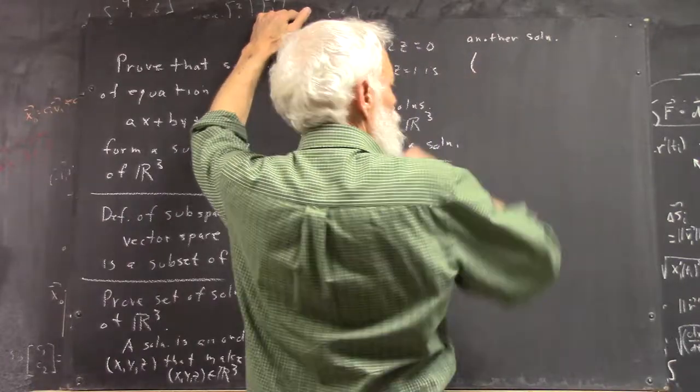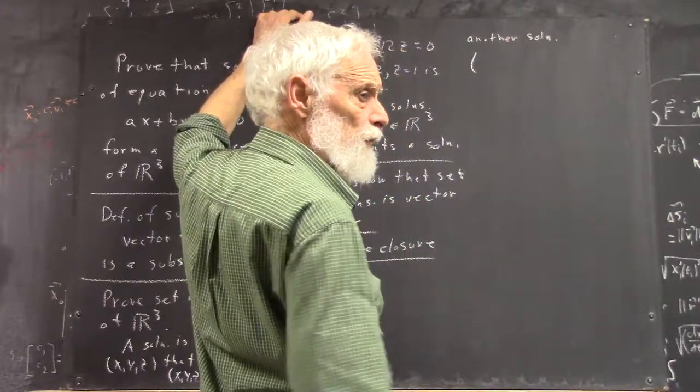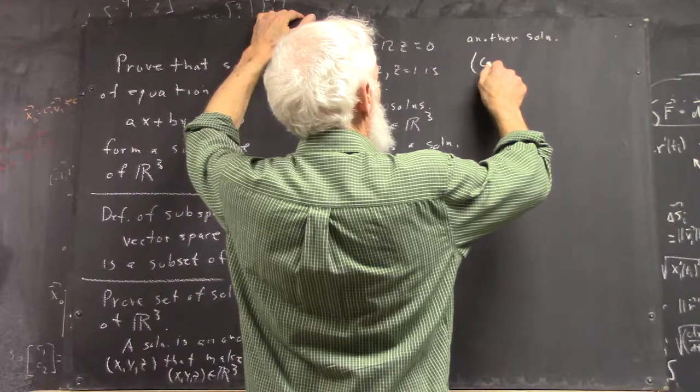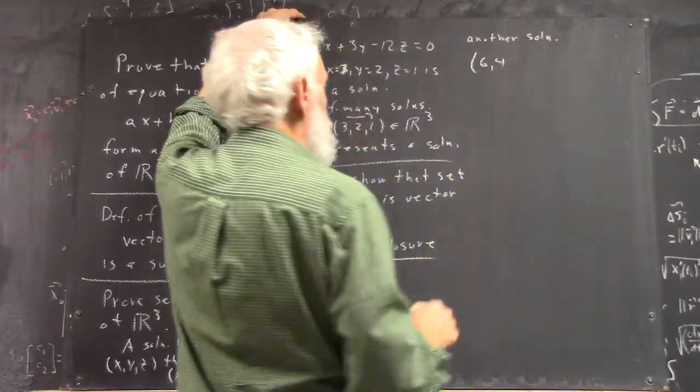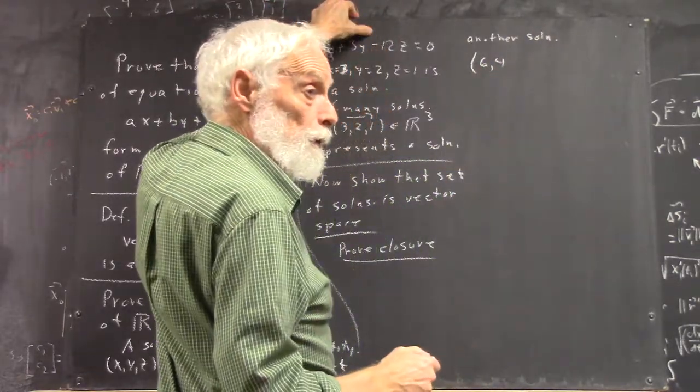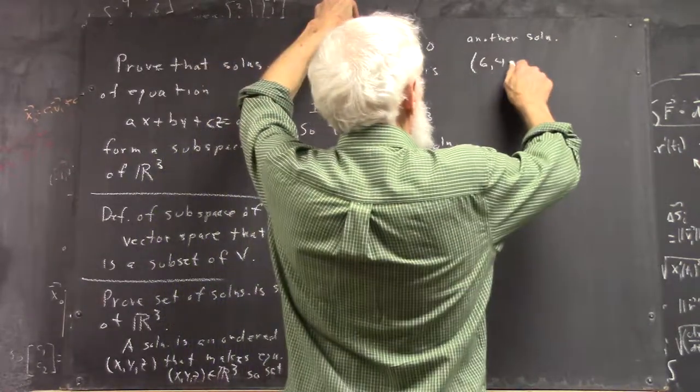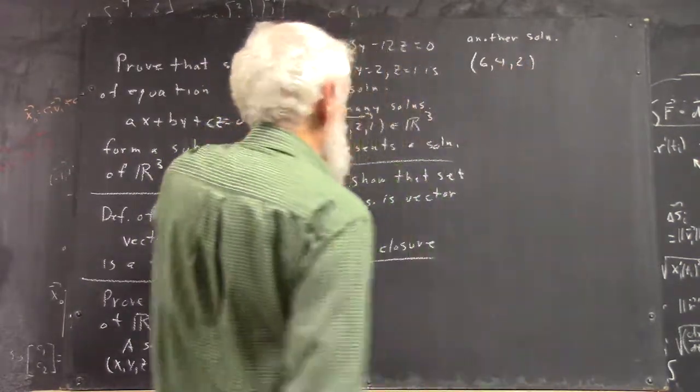I think you said x was six, y was four. So you're going to have 12 and 12, so z would have to be two, right? So I hope that's right.